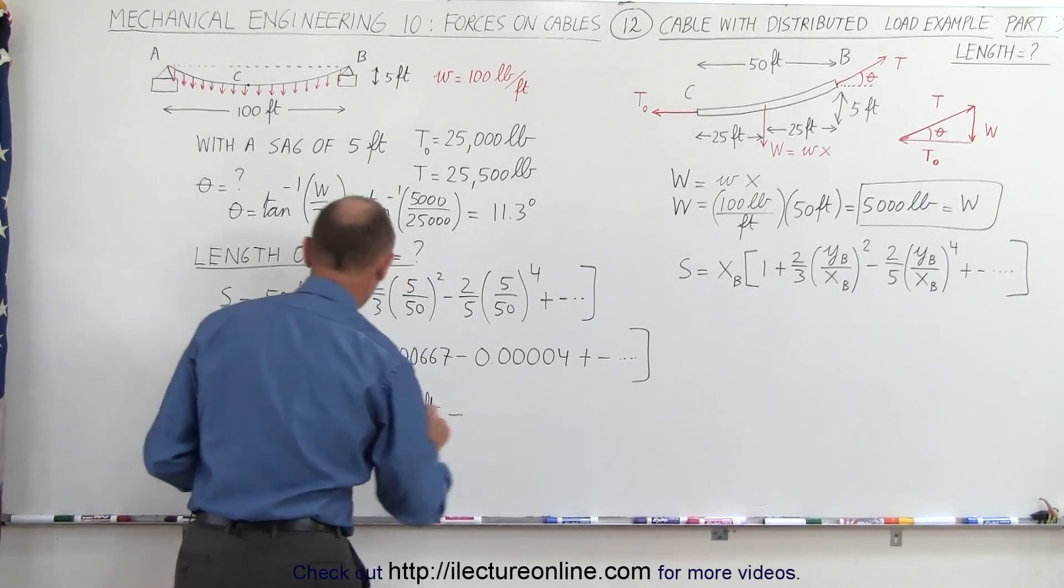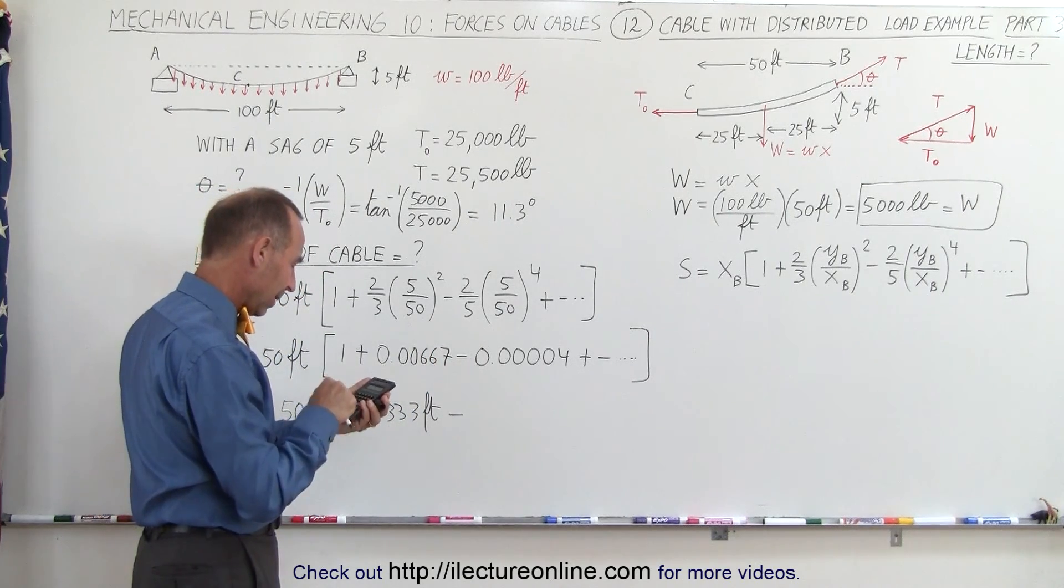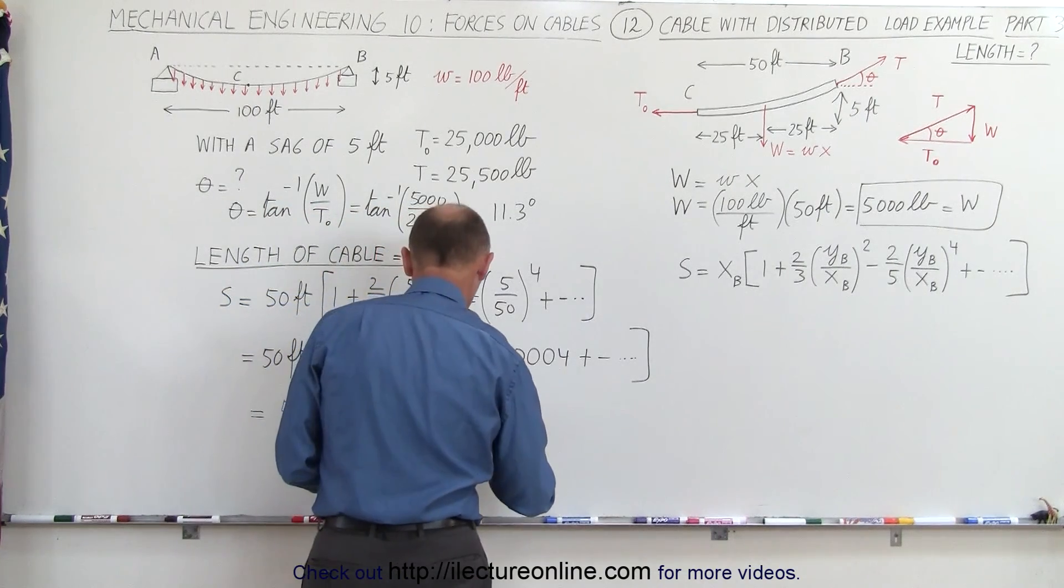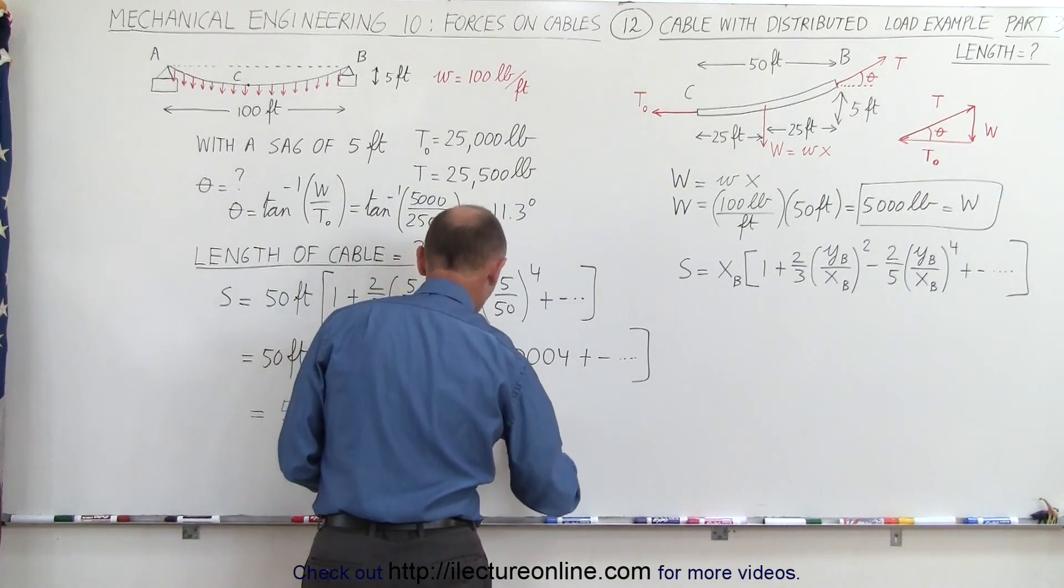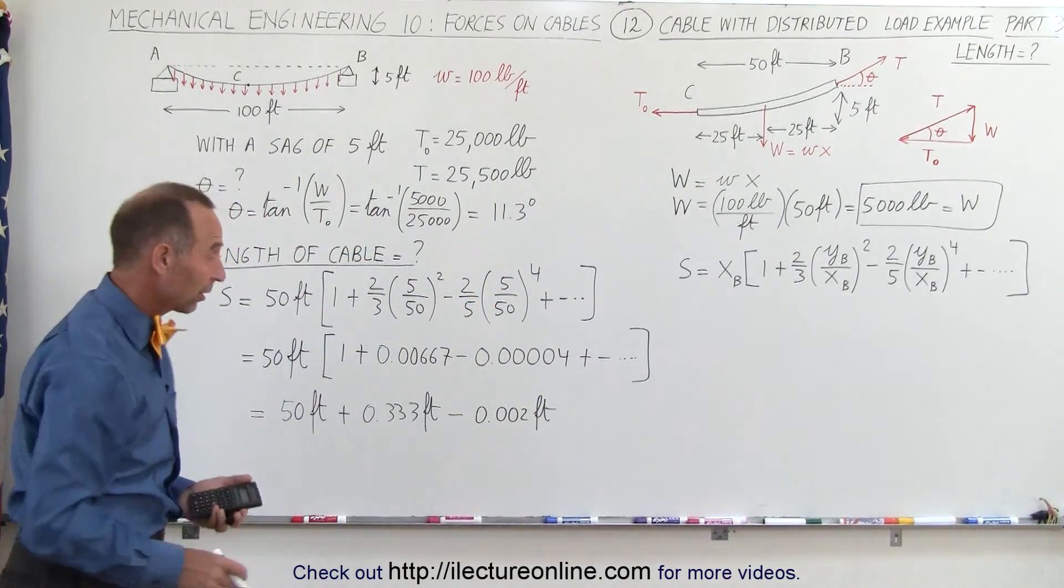And then minus 50 times that, so we get 0.00004 times 50 equals, and we have minus 0.002 feet. And of course any additional terms you may want to consider.